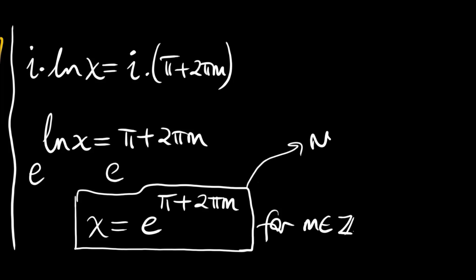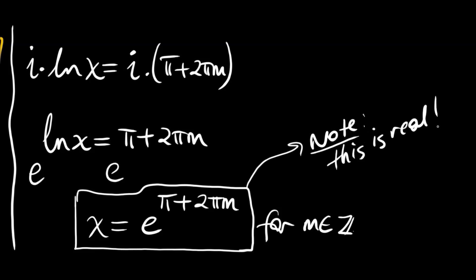Surprisingly, the answer is a real number. Let me note that — this is real. So a real number to the power of i becomes another real number, negative 1. Thank you for watching and see you next time.